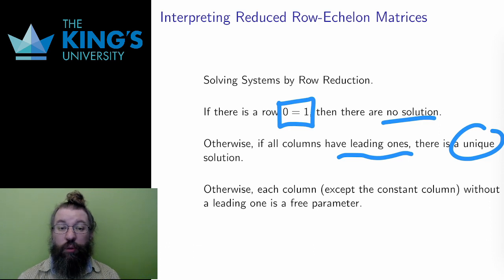If there is a column without a leading one in it, that column will represent a free parameter. The number of such columns will be the number of free parameters, which is the dimension of the solution space.